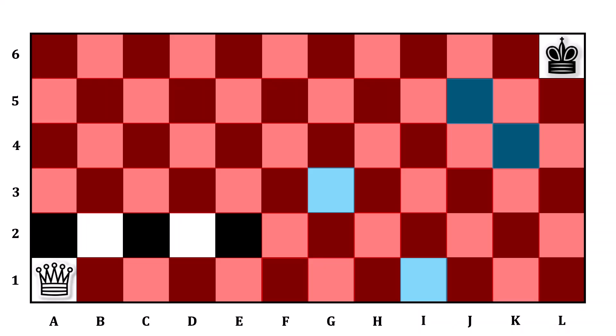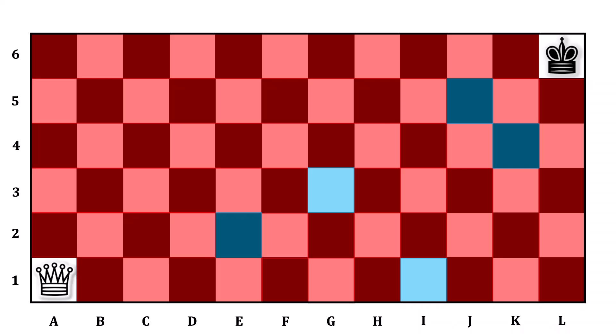From here, that makes E2 a winning square, and because E2 cannot be a place that you allow your opponent to move to, you cannot place the queen anywhere else in row 2. And thus, as we see now, there is exactly one winning move for the queen on the very first play of the game, and that is to I1.